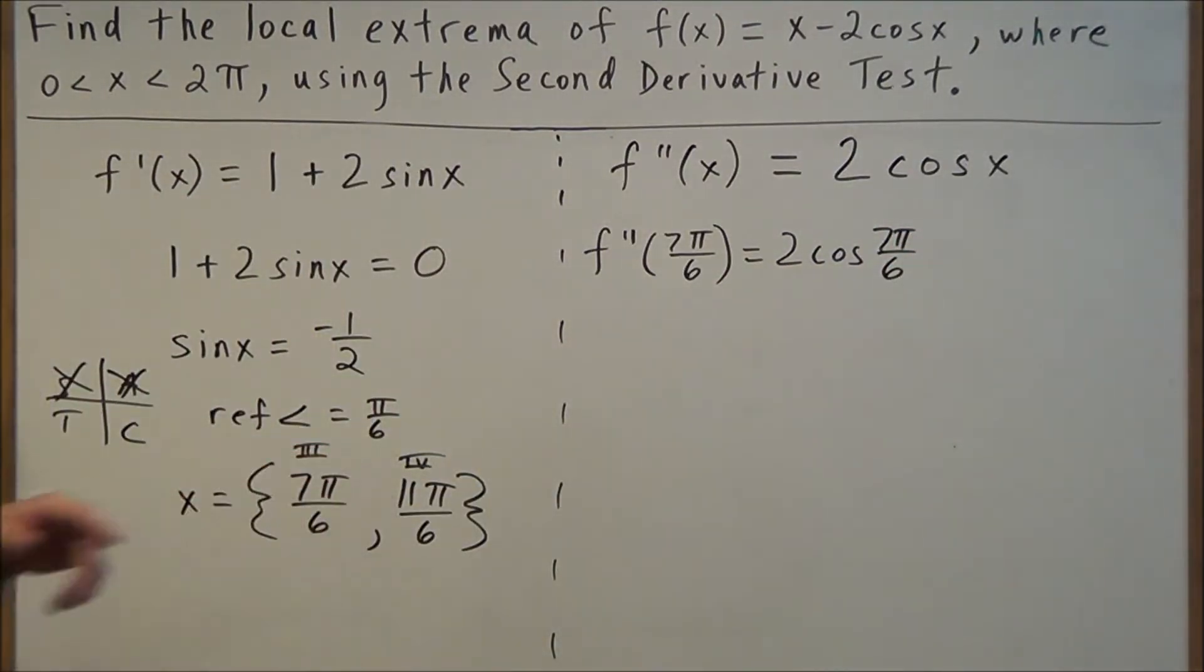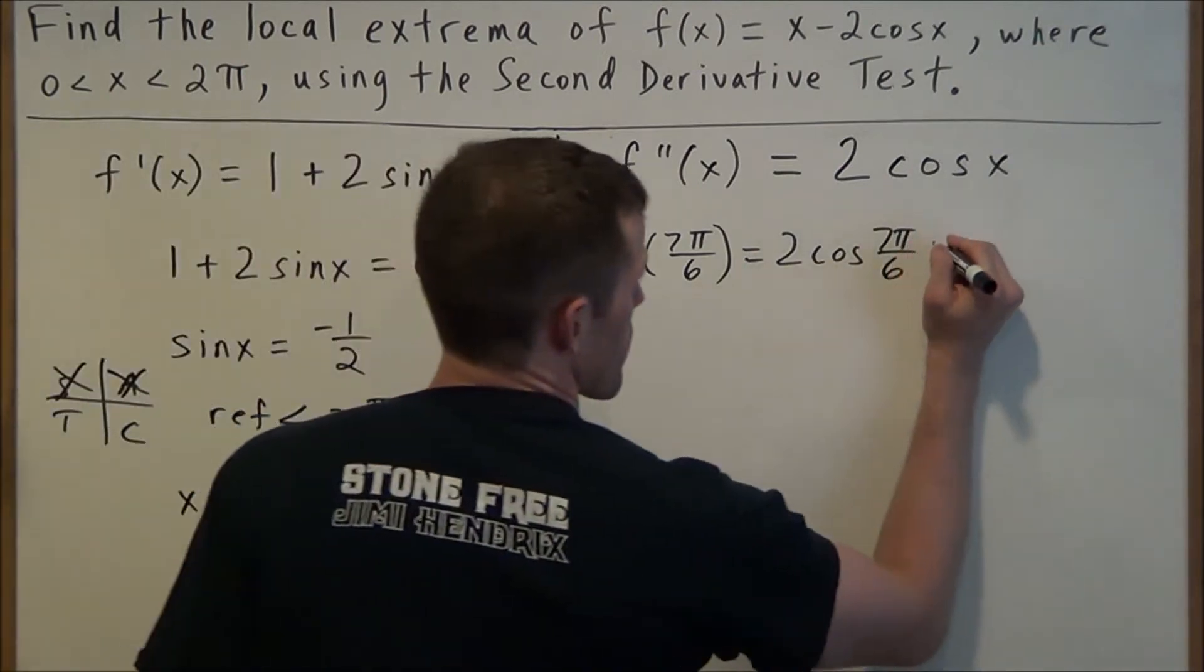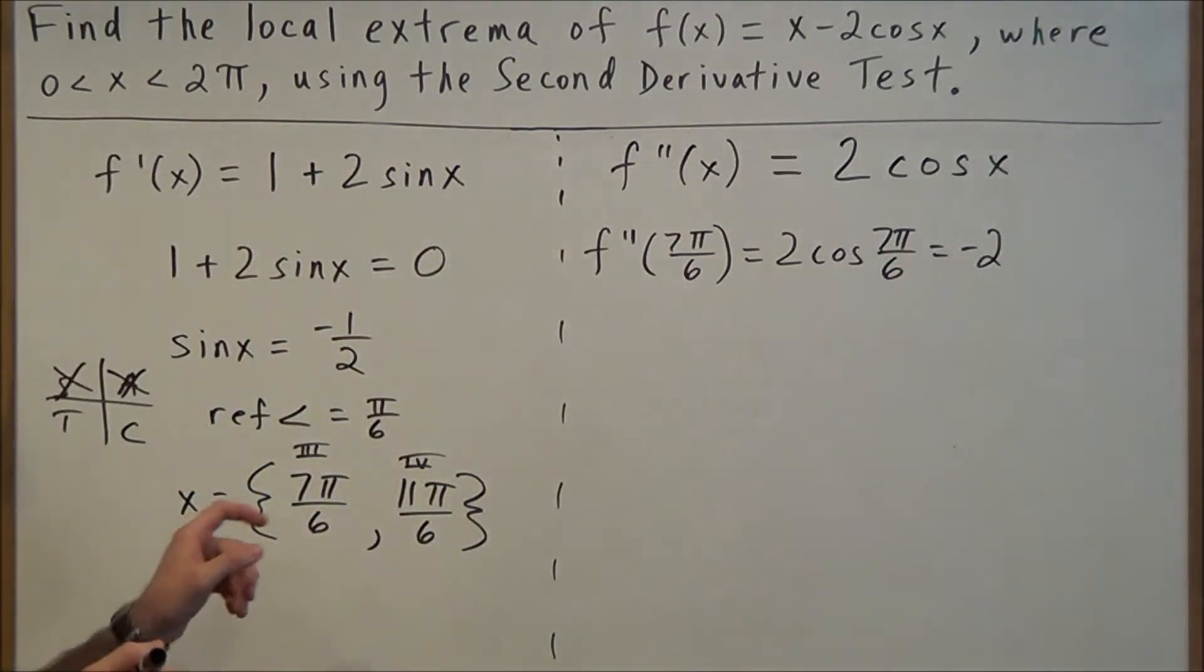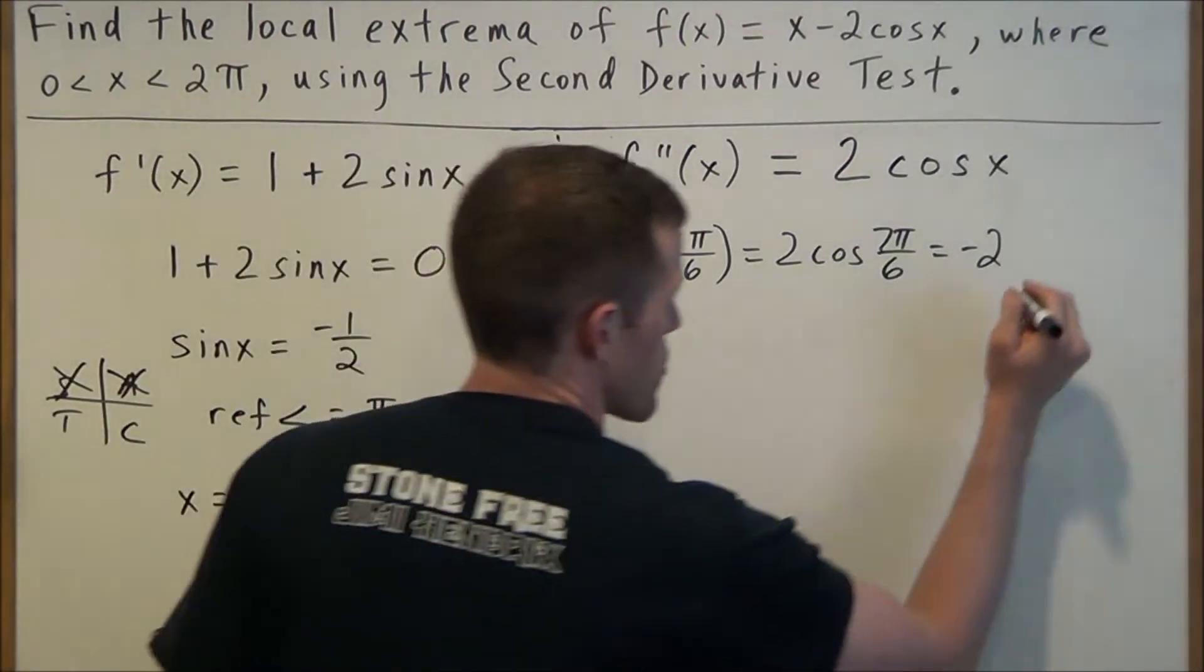Now remember, our reference angle is 30 degrees, and 7π/6 is in quadrant 3, so our answer is automatically negative here. We're going to have -2, and cosine of π/6 is √3/2.